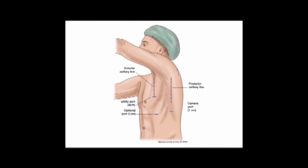The illustration now shows the left-sided port anatomy for approaching a thoracoscopic left upper lobectomy, left lower lobectomy, or segmentectomy. The utility port is located on the left anterior axillary line, but is slightly rotated more posteriorly than the right-sided illustration to avoid the pericardium. This illustration shows a four centimeter incision, which can be anywhere from three to five centimeters depending on need. A posterior axillary line one centimeter port in the seventh intercostal space is used as the camera port, and an additional optional port can be placed in the anterior axillary line inferior to the utility port.